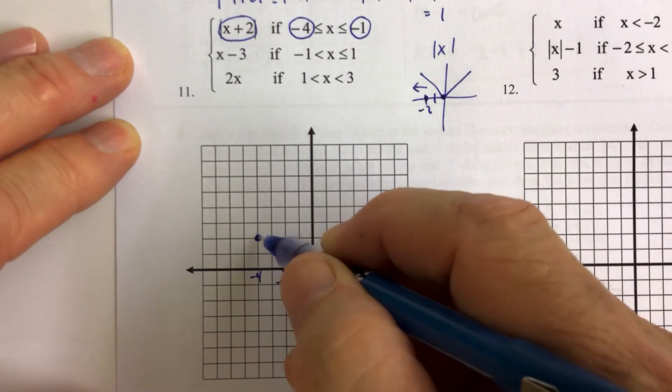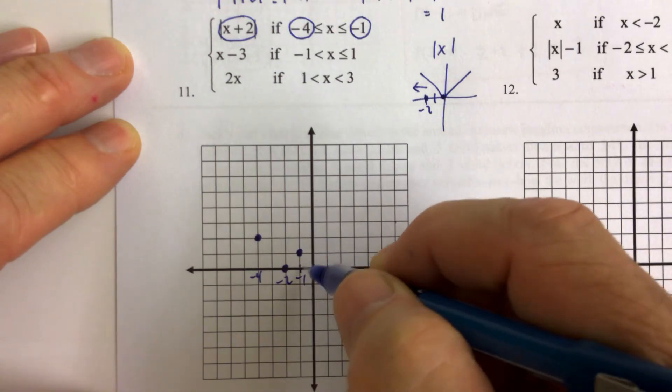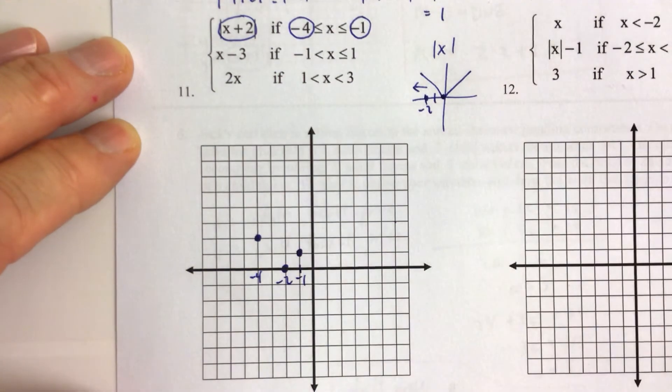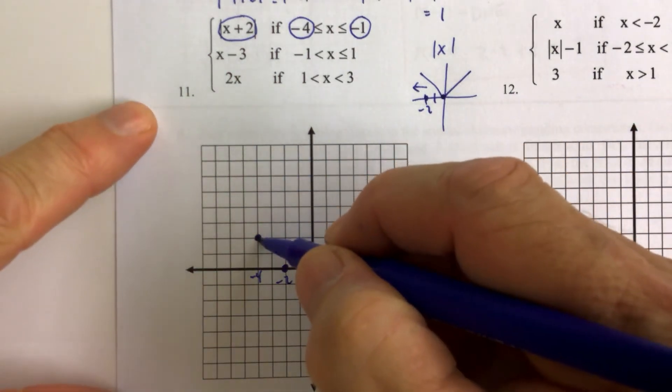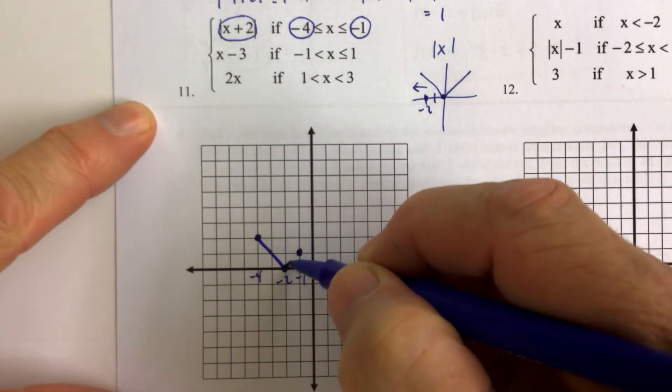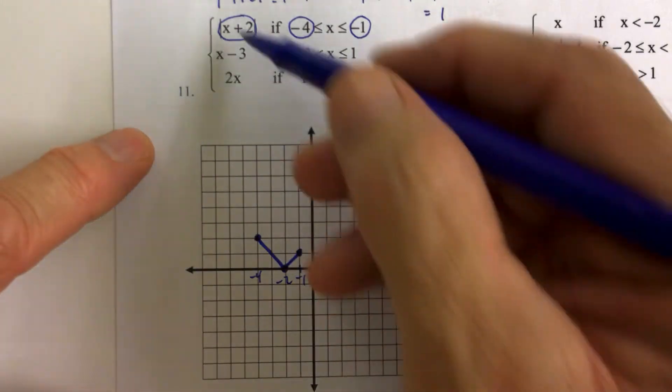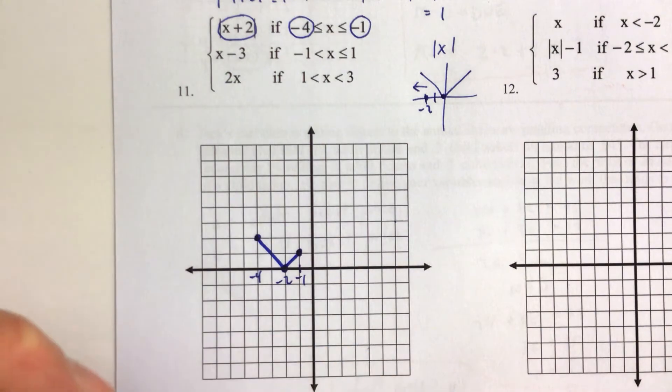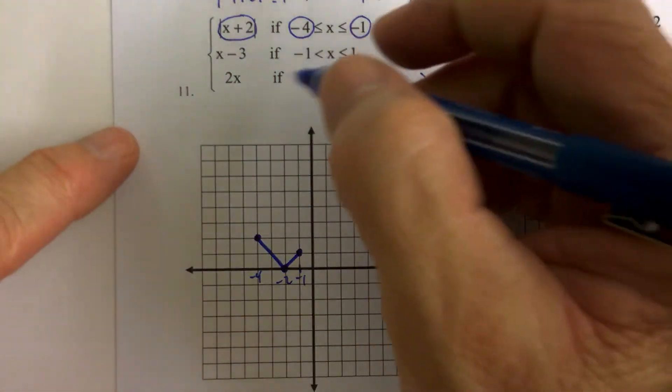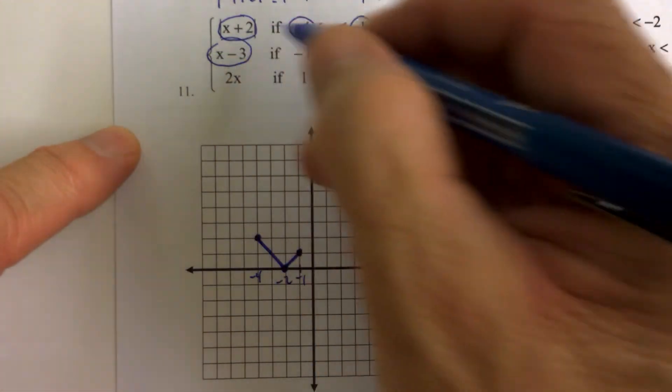We had negative 4, 2. And we had negative 1, 1. And now we connect the dots, but make sure you hit all three dots. So we connect those guys. This is the piece of the y equals absolute value of x plus 2 on the interval from negative 4 to negative 1. And now we do the same thing for the second piece.